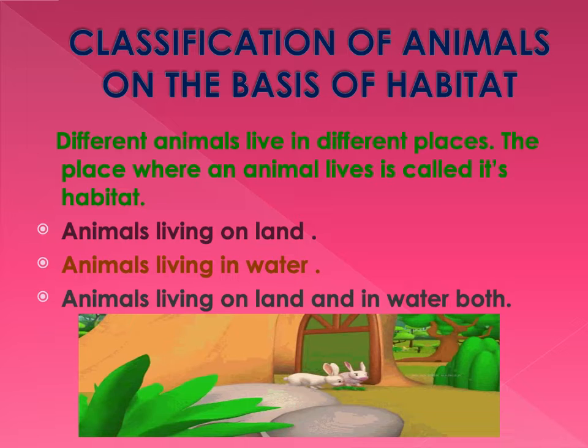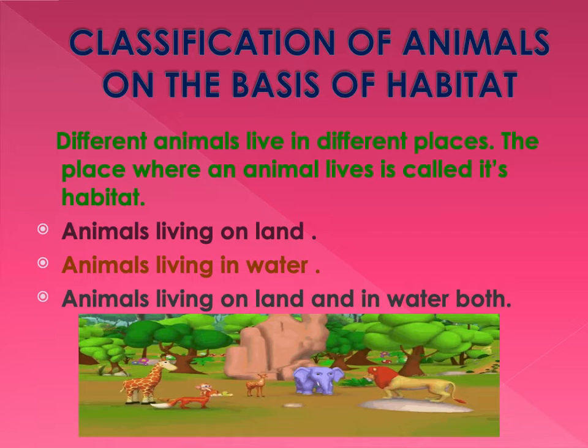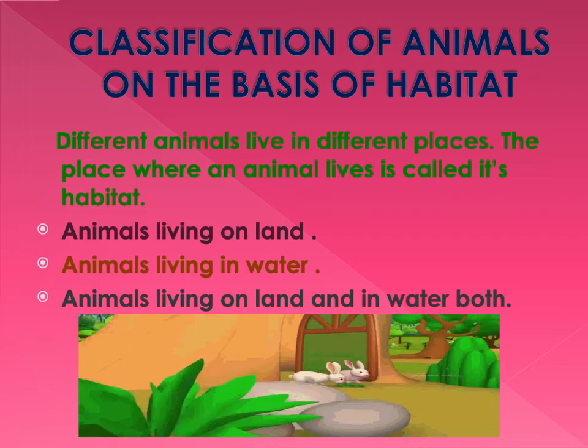Now let's learn about different types of animals and where they live. First is animals living on land. Next is animals living in water. And the other category is animals living on land and in water both.